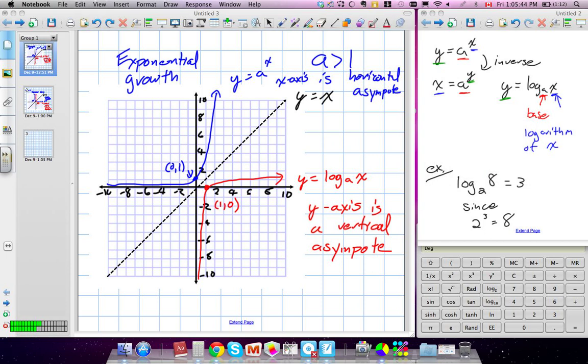Okay, so we're talking about logarithmic functions. We have a graph here. The first graph here of our blue one is giving us our exponential model. In this case, we have a greater than 1, which means we're talking about exponential growth.